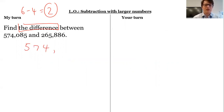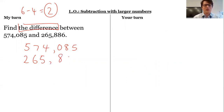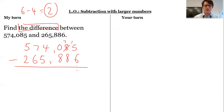As I'm writing out 574,085, I'm noticing this placeholder zero and thinking to myself, oh dear, I'm going to have to be a little bit careful here. So 5 subtract 6 I can't do — let's regroup. So I get 9.